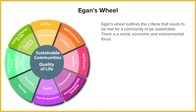These wedges are all grouped in terms of social, economic, environmental, and political. The inner ring represents each theme that needs to be met for a community to be truly sustainable. The outer ring represents a condition that needs to be met within that theme.